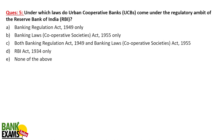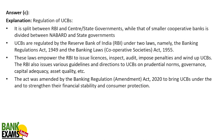Question number 4: Under which laws do urban cooperative banks come under the regulatory ambit of the RBI? Two laws apply: the Banking Regulation Act and the Banking Laws (Cooperative Societies Act) 1955. UCBs are regulated by RBI under these two laws, which empower RBI to issue licenses, inspect, audit, impose penalties, and wind up urban cooperative banks to provide financial stability and safeguard depositors' money.